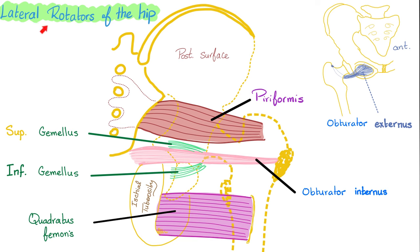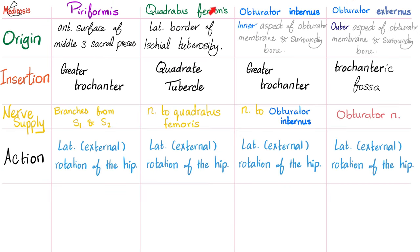Now the lateral or external rotators of the hip. Think about it — if you're going to rotate the hip externally, you need to attach to the hip and sacrum and insert into the femur in order to pull it and rotate it externally. We have six muscles: piriformis, quadratus femoris, and then two obturators — obturator externus and obturator internus — and above and below the obturator internus, superior gemellus and inferior gemellus. Their action: external rotation of the hip.